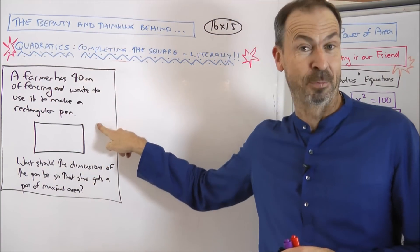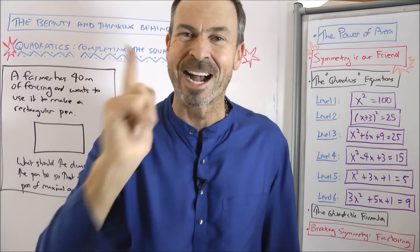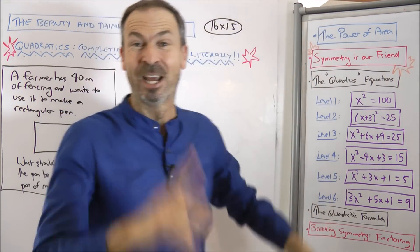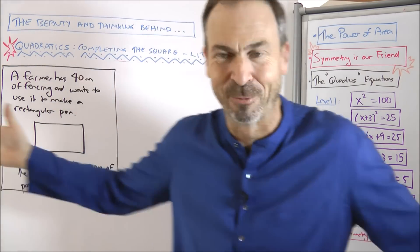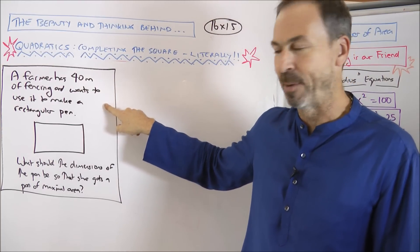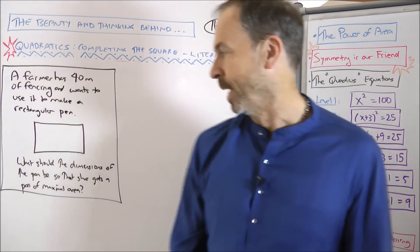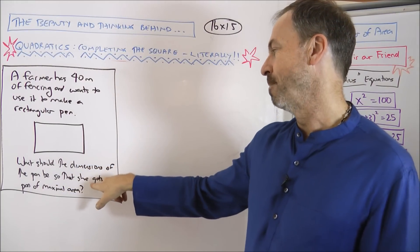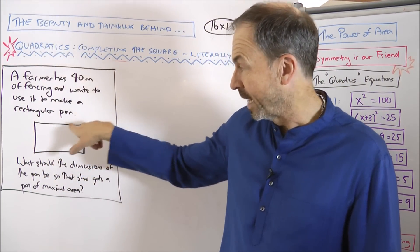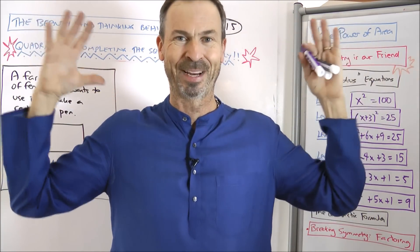Here's the classic problem: a farmer has 40 metres of fencing to make a rectangular pen. The perimeter is 40. What dimensions should the pen be to give maximum area? I'll use the principle that symmetry is our friend. If the pen were symmetrical — 40 metres, four equal sides — it would be 10×10×10×10. That's the symmetrical answer.